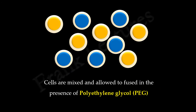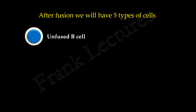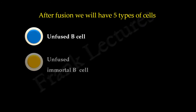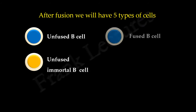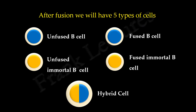We mix these two types of cells and expose them to polyethylene glycol. PEG is a chemical fusogen, so the cells will fuse with each other. As a result of this fusion, we will have five types of cells in the mixture: unfused antibody-producing B cells, unfused immortal B cells, fused antibody-producing B cells, fused immortal B cells, and hybrid cells formed by fusion of an antibody-producing B cell and an immortal B cell.